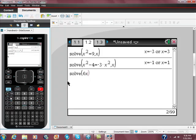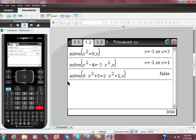I am going to backspace over that. 6x squared plus 5 is equal to 2x squared plus 1. You have everything right. You put in comma x. Come back. It's false. Well, the truth of it is this is false.